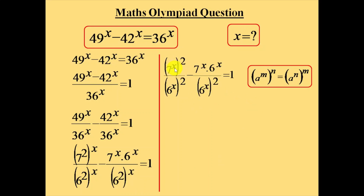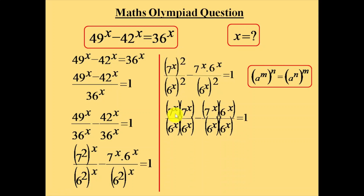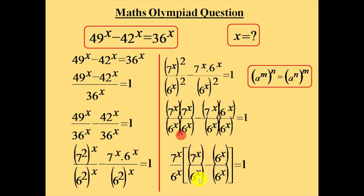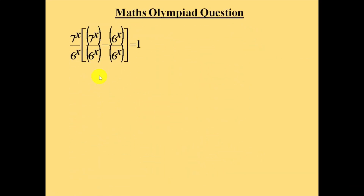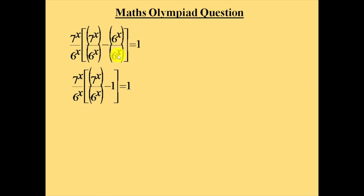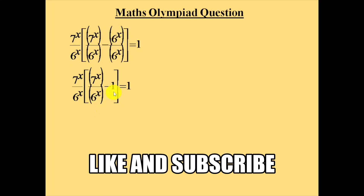Now, write these squares as products: 7^x whole squared as 7^x into 7^x, and 6^x whole squared as 6^x into 6^x. Then take 7^x over 6^x as common from the first two terms. The remaining bracket has 7^x over 6^x minus 1. We can see that 6^x appears in both numerator and denominator, which cancel to give 1.